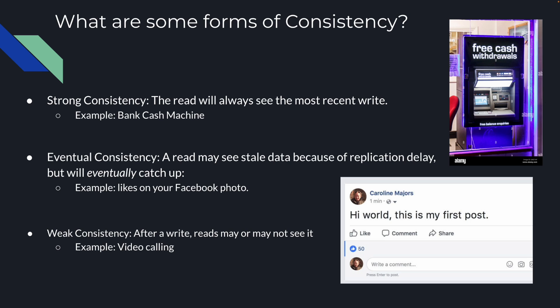One way we can think about this is likes on your Facebook photo. You log into Facebook, make a post, and people start liking it. On some database shard — because Facebook is a massive system with databases across the world — one database machine may show 50 likes. But if you refresh the page, a different database server returns your like count and that one only has counted 46 likes. Eventually the second server will get the actual count of 50, but in the meantime you're going to see 46 when the real count is 50.